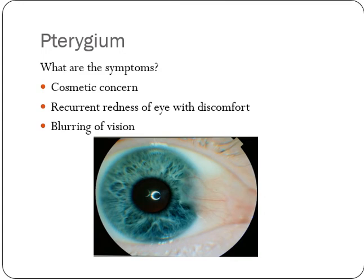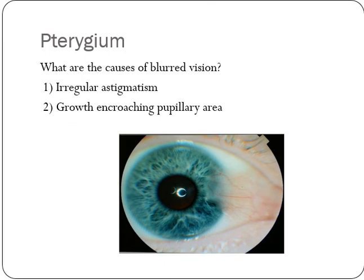What are the symptoms of pterygium? The most common presentation is a cosmetic concern — patients may notice some fleshy growth coming onto their cornea. In cases of recurrent inflammation, they can present with recurrent redness of the eye with discomfort and watering. Pterygium can also cause blurring of vision, but not in all patients — only when the pterygium is quite advanced.